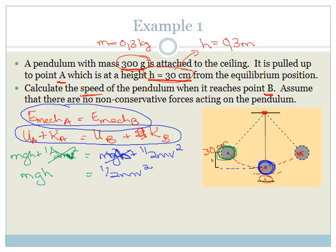A lot of students make the mistake of just writing MGH equals a half MV squared. Although it's true for this example, if you just write this down you are showing that you don't actually know the conservation of mechanical energy, and you will lose marks. So please make sure you write down either the full mechanical energy statement or the expanded form to show that you know conservation of mechanical energy is being applied.